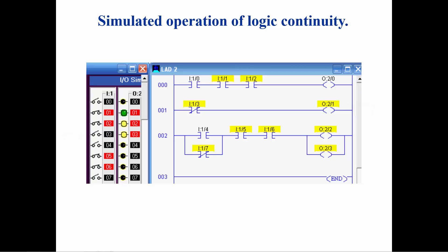Rung 2 has a combination of examine if open and examine if closed instructions. As long as there is at least one path of logic continuity from left to right, the outputs will be turned on.